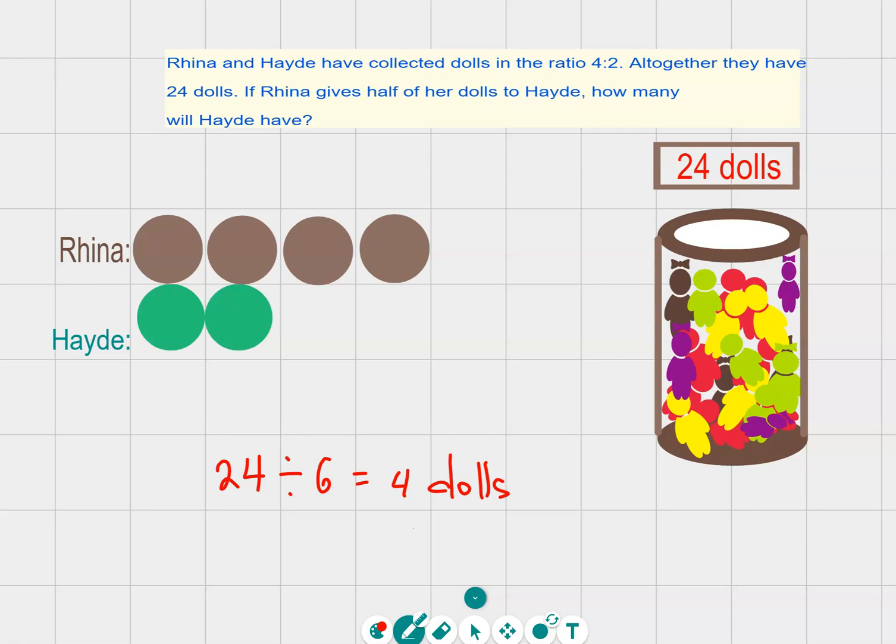Now Rina gives half of her dolls. So 4 divided by 2, so she's giving 2 counters. And each counter has 4 dolls.